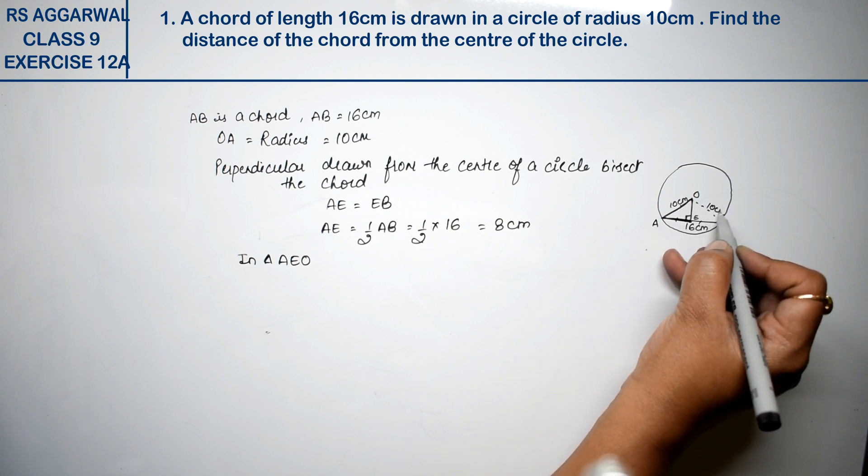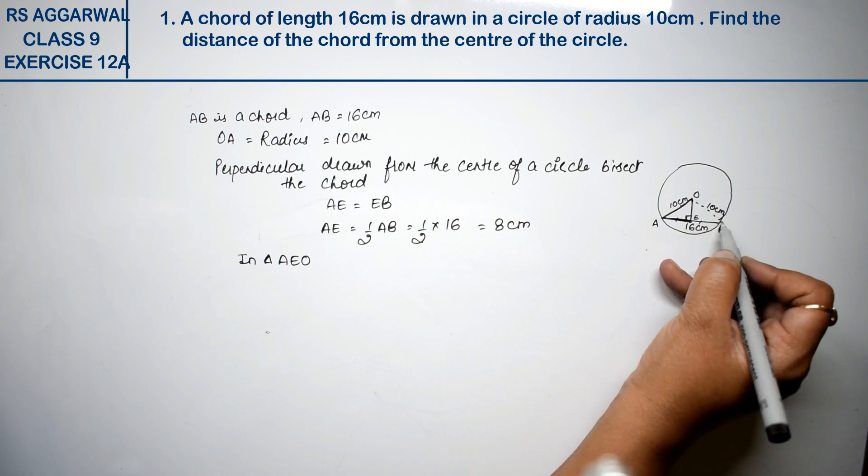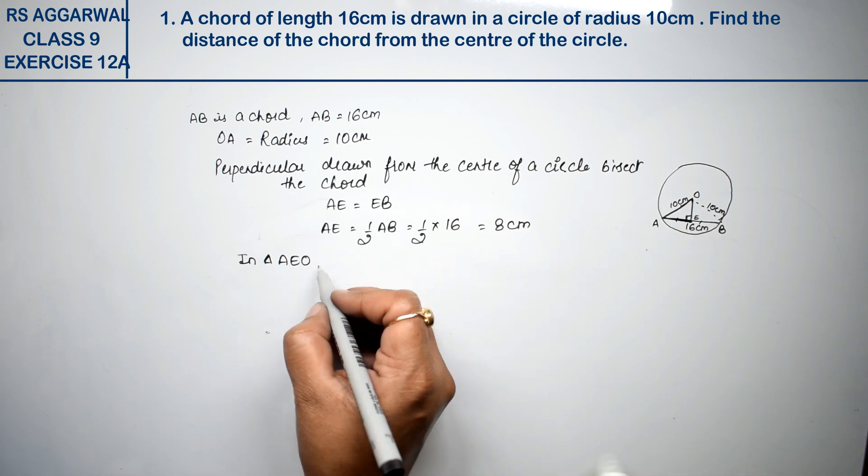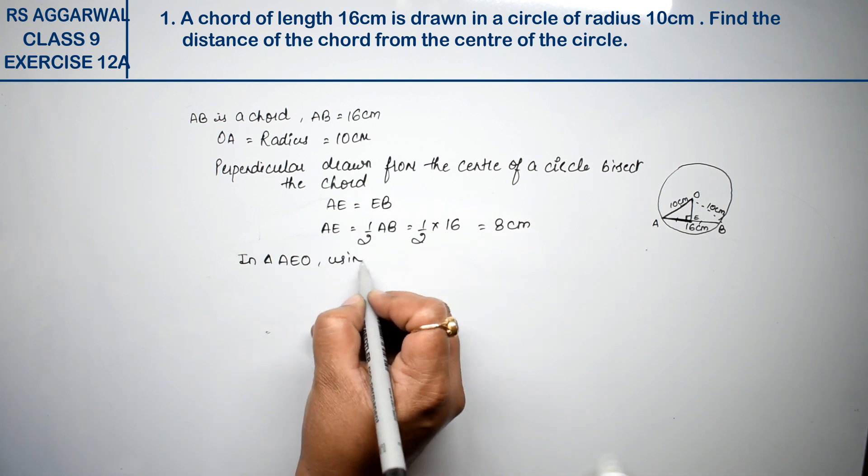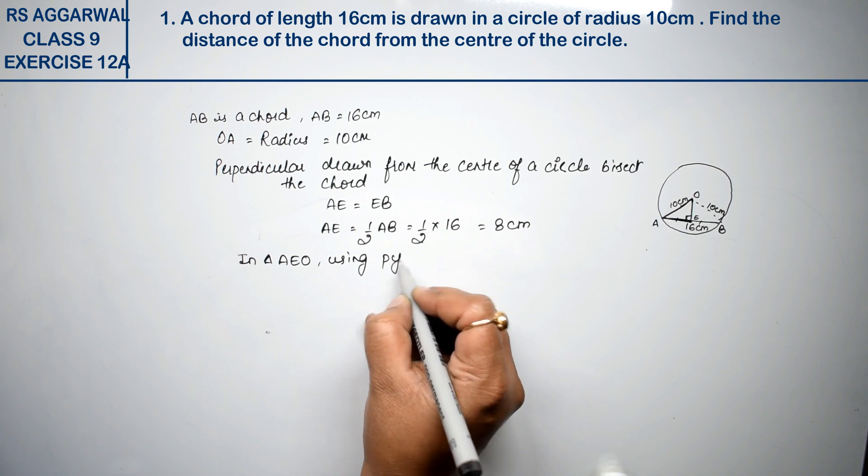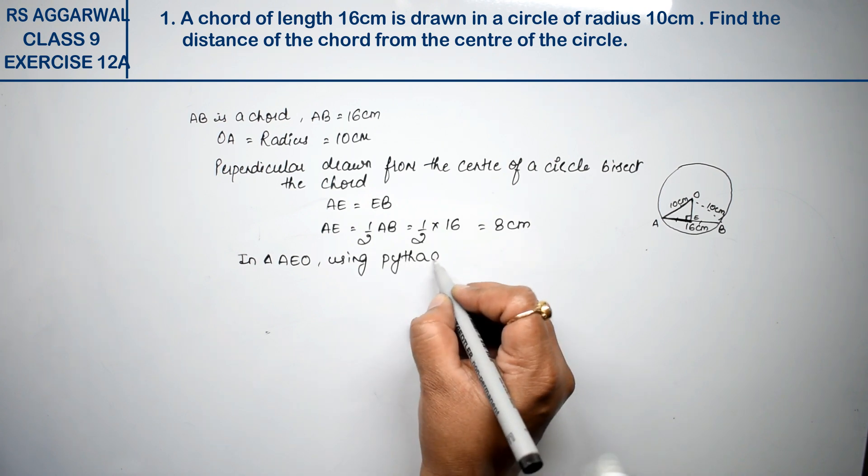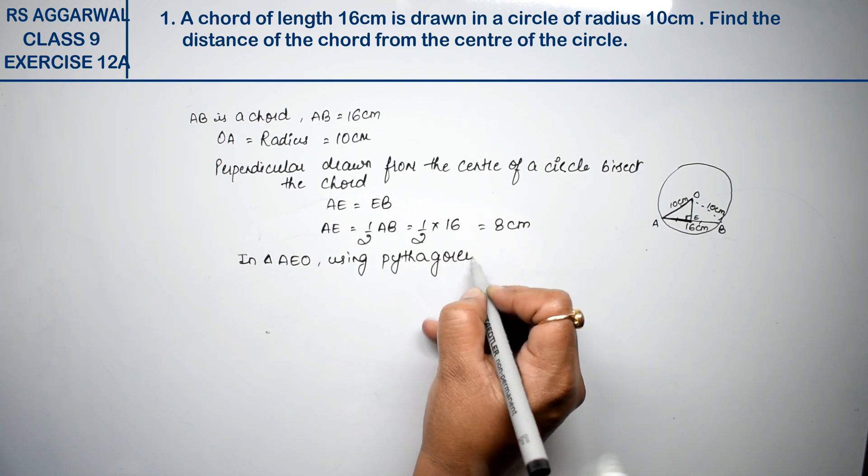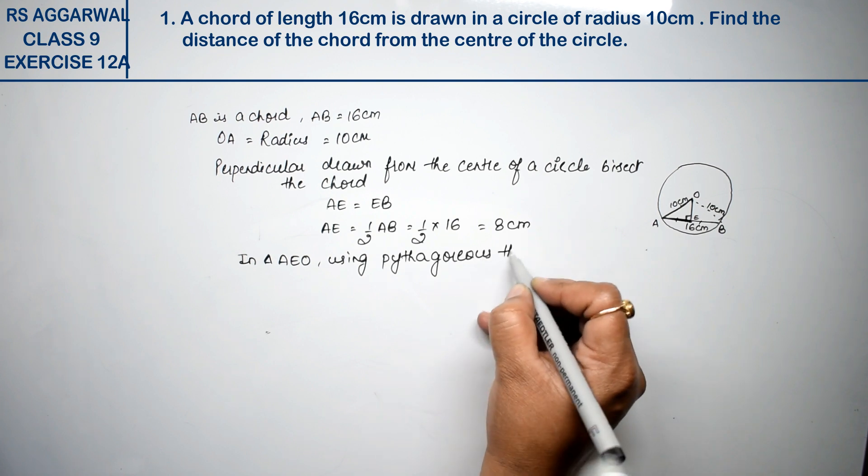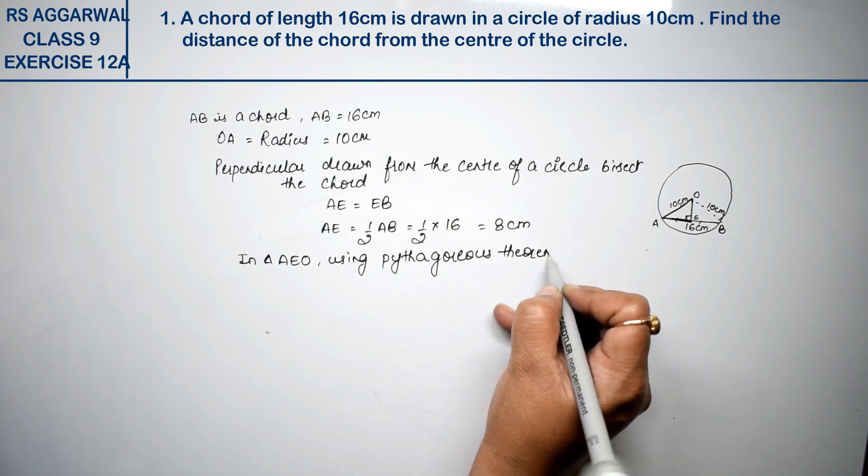This is 10 cm and this is also 10 cm. The radius of the circle will touch the circle from the center. It is the same length. Using Pythagoras Theorem.